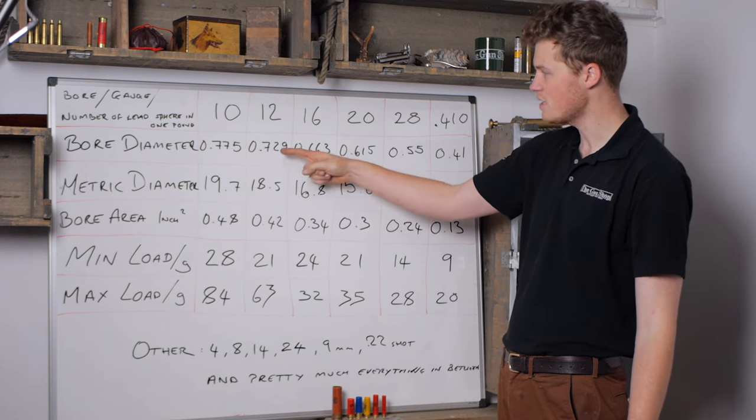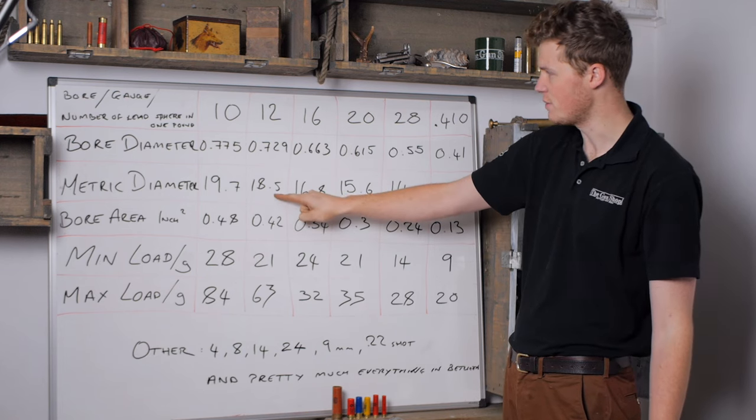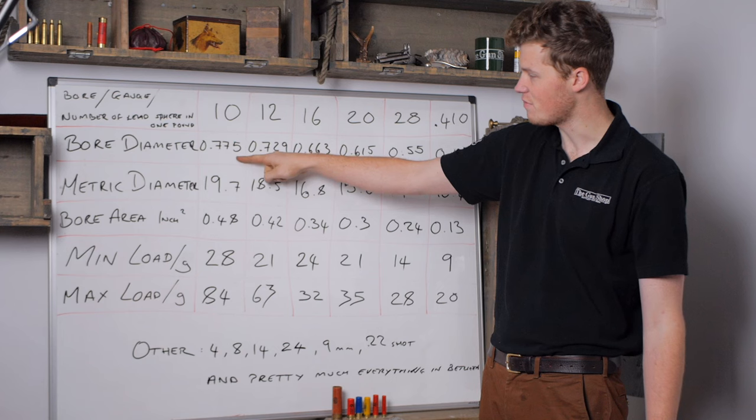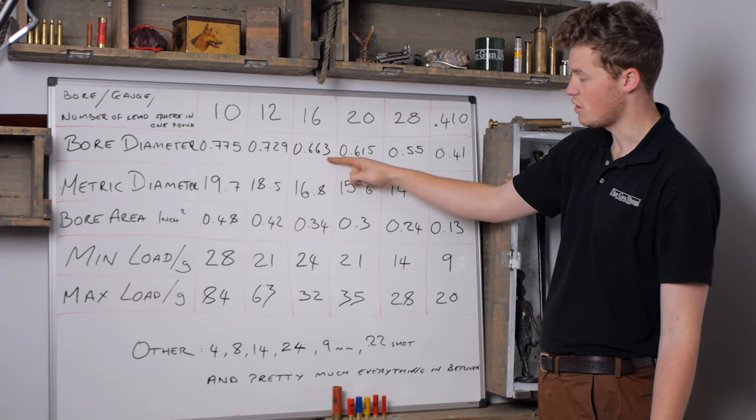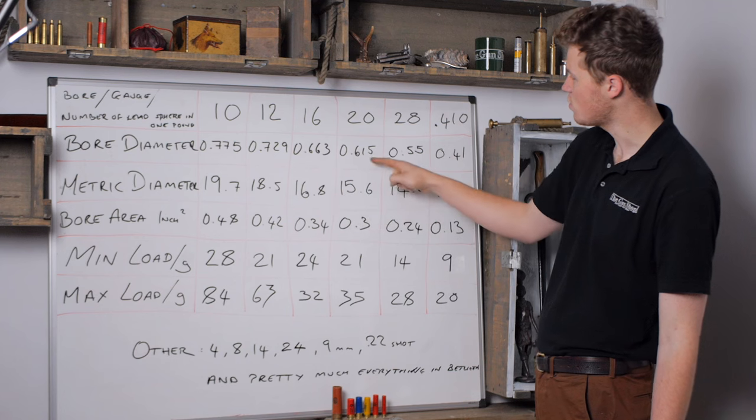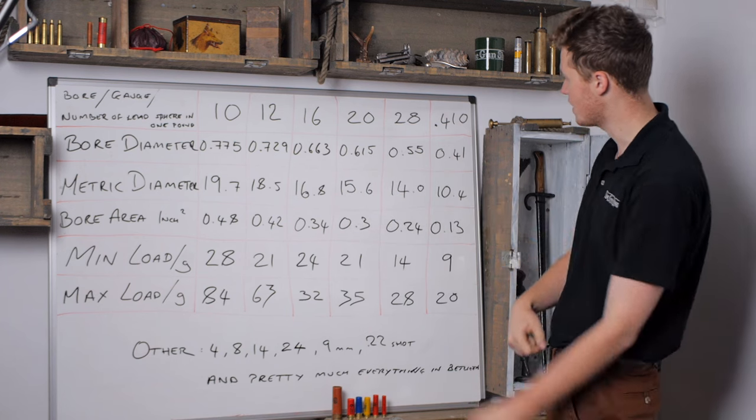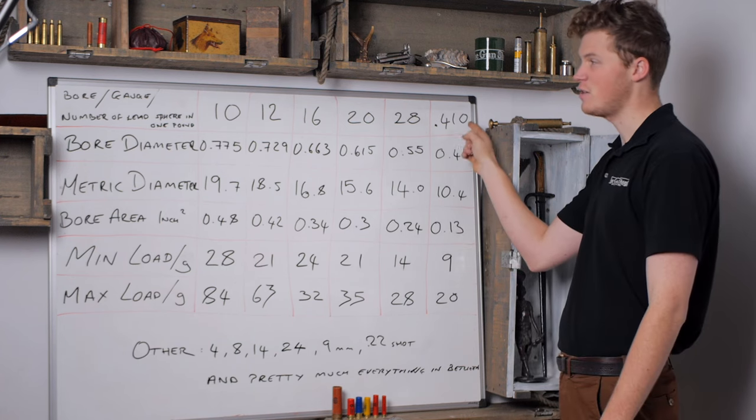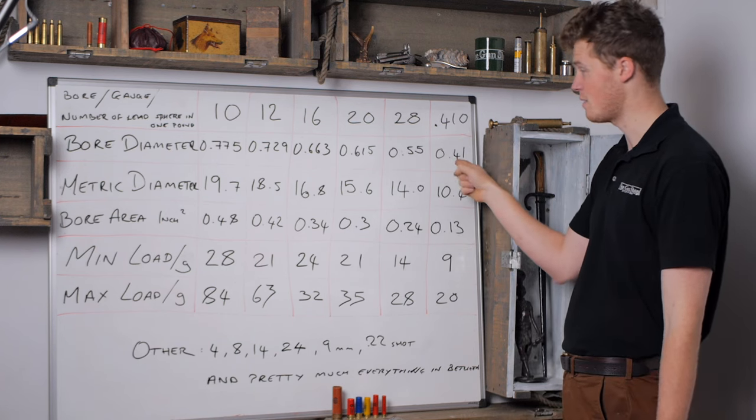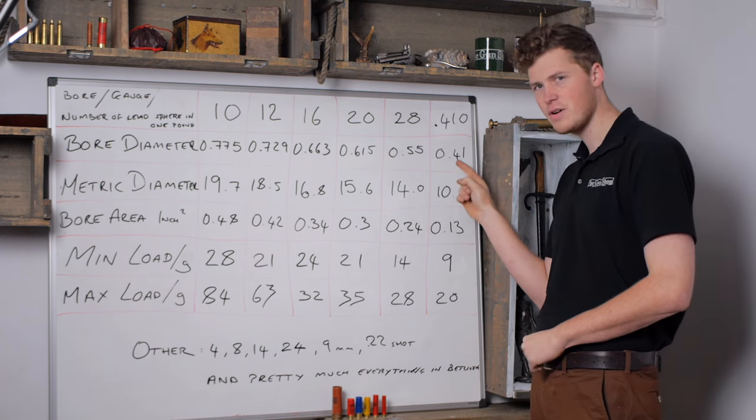.729 of an inch is normally 18.5 millimeters. 10 bore is .775 or 19.7. 16 at .663—two-thirds of an inch—or 16.8. 20 at .615 or 15.6. 28 at 0.55 or 14.0, and .410, which actually is just called .410 because it's a .410 bore diameter, which is 10.4.